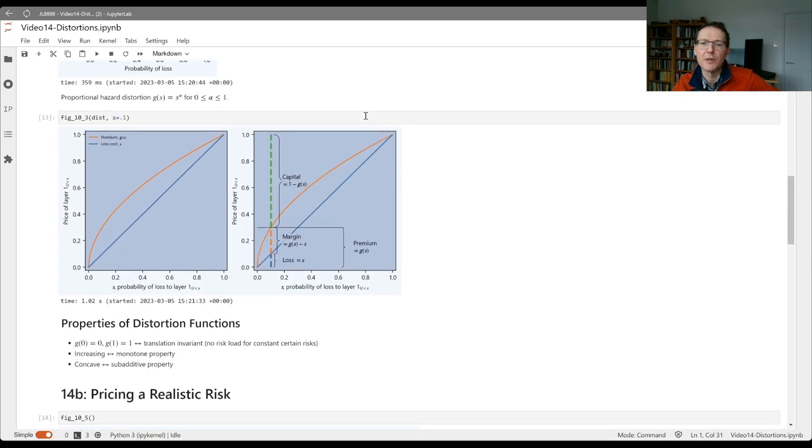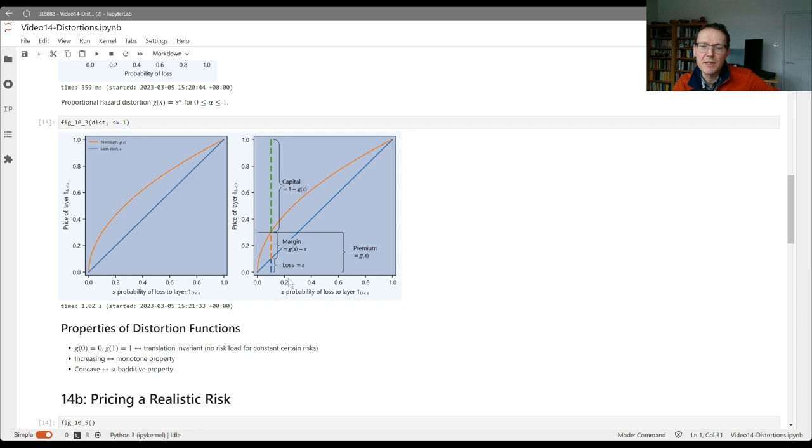The x-axis here is actually quantifying the security that's being priced, because the security maps to the probability of loss of the layer. That defines what the security is. So here you've got securities on the x-axis, and the tail is on the left-hand side because we're dealing with survival functions. So they're the lowest loss cost but the largest kind of margin markup. And then we've got the price on the y-axis.